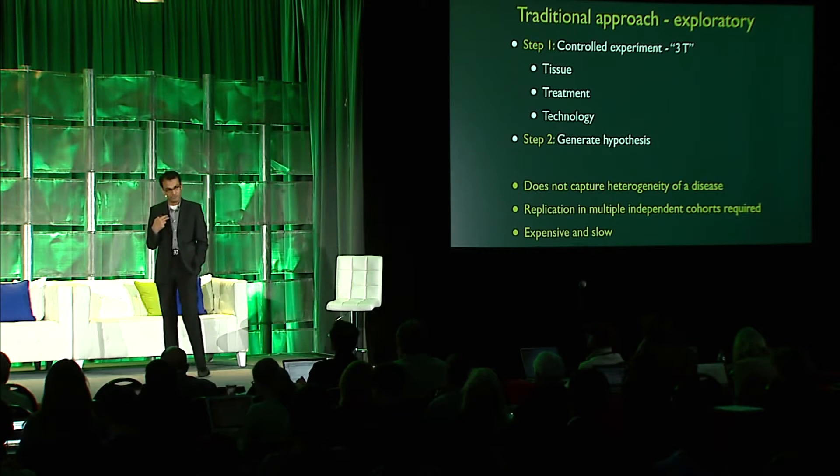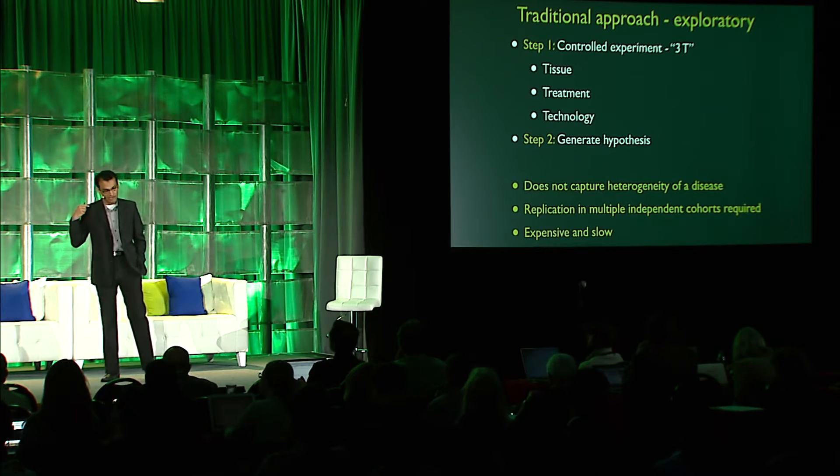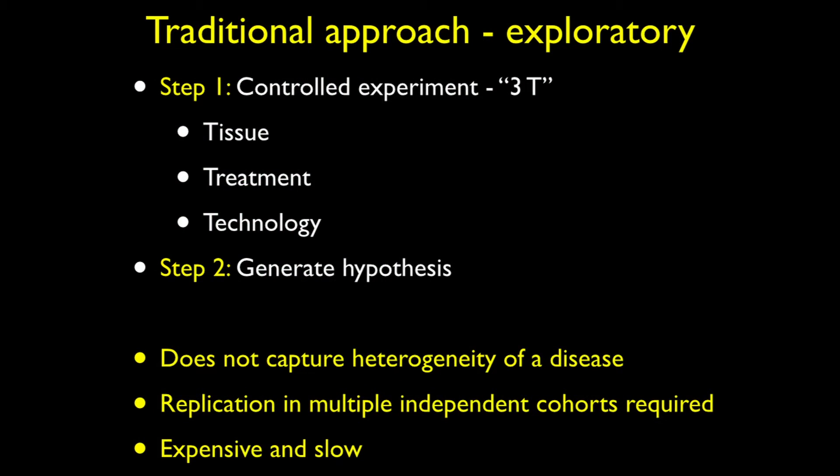What is the advantage of using public data? If you think about how we've been doing experimental science for decades, we've been running these controlled experiments — I call them the three T's. We are controlling tissues, treatment, and technologies, because every sample comes from the same tissue, they are all treated equally, and they are profiled using the same technology.